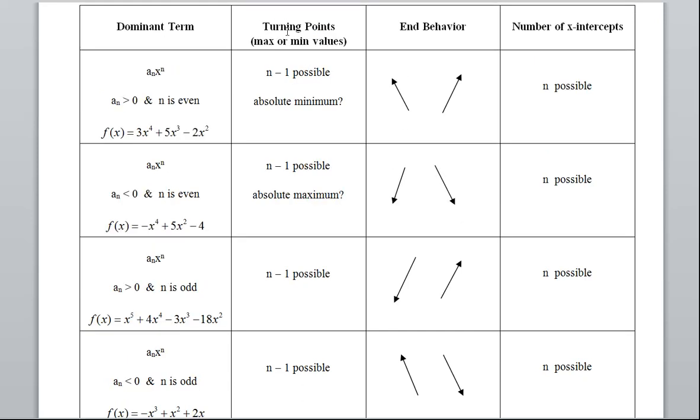Now, turning points, we can tell a lot by looking at the dominant term. How many turning points I have, that's my possible max or min values, is where the curve just turns. It goes up and then it turns and comes back down. Or maybe it's going down and then it turns and comes back up. Which is where my max and mins are.